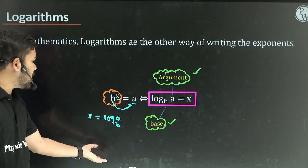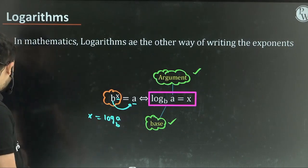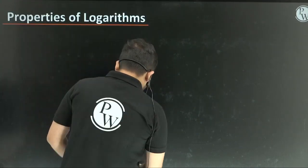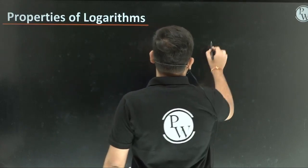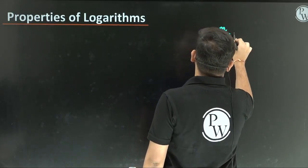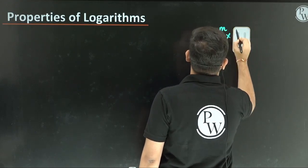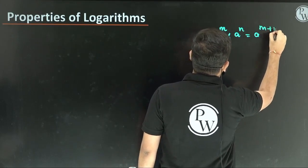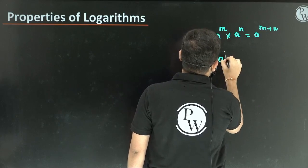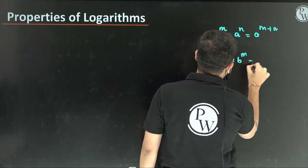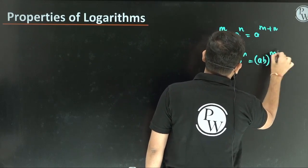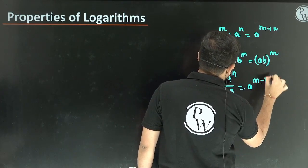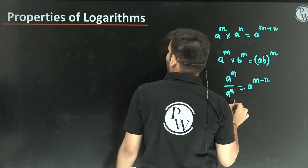So nothing new here. My exponent properties — whenever the bases are equal in a to the power of M times b to the power of N, whenever bases are equal in a power sign, we add the exponents. A to the power of M into A to the power of N equals A to the power of M plus N. And A to the power of M divided by A to the power of N equals A to the power of M minus N.